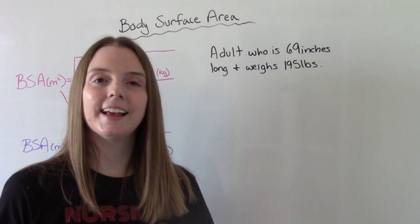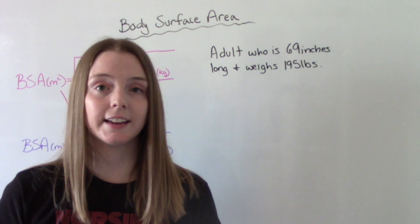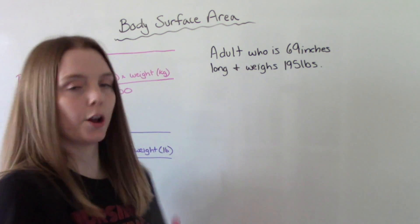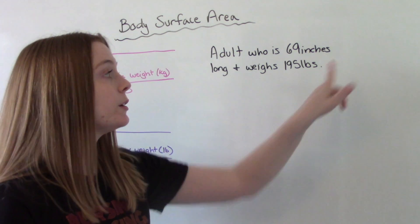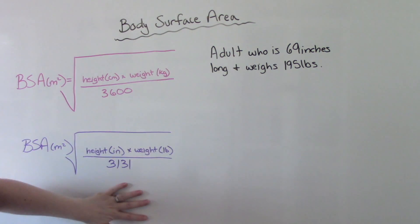Let's do another one. In this example, we have an adult who is 69 inches long and weighs 195 pounds. So now we're using inches and pounds. So we're not going to use this formula. We're going to use this one.